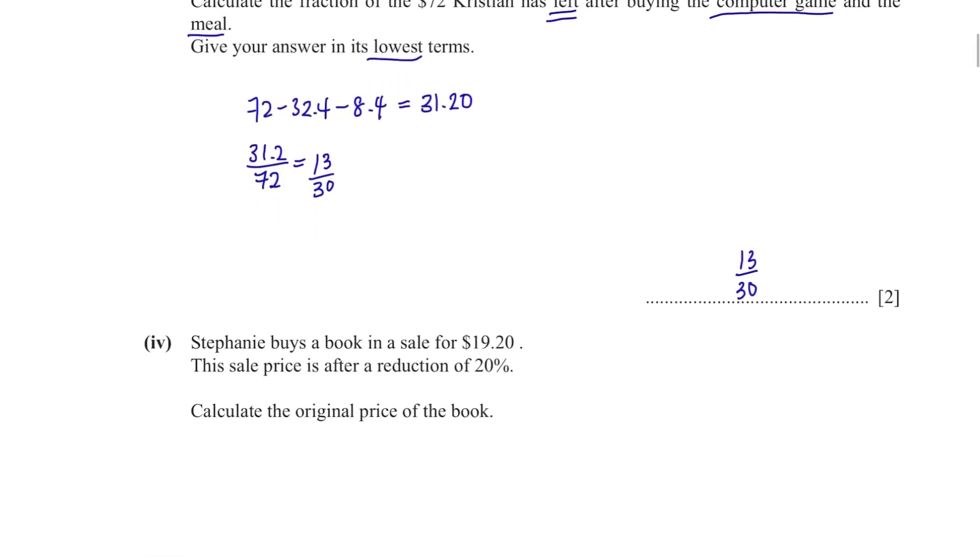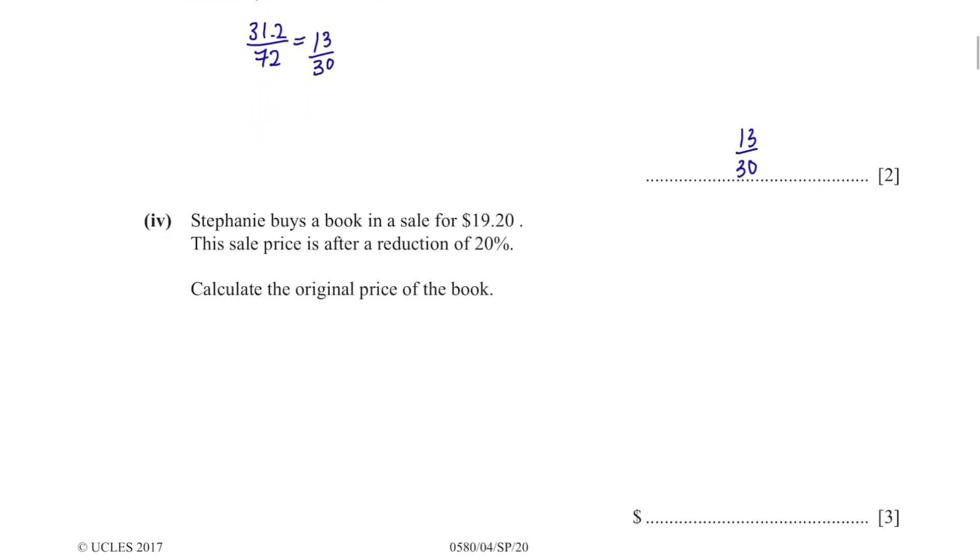Make sure you put your answer in its simplest form. Stephanie buys a book in a sale for $19.20. This sale price is after a reduction of 20%. Calculate the original price of the book.